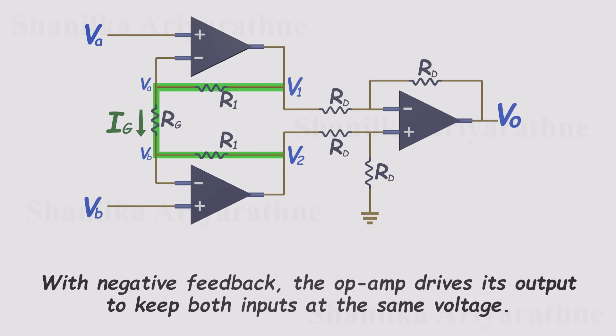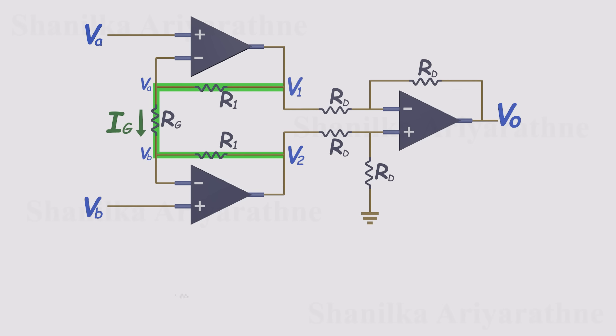That means this node must be at VA and this one at VB. And since op amp inputs draw almost no current, the same current flows through the entire resistor chain between V1 and V2. Let's call that current IG. We can write IG equals V1 minus V2 divided by R1 plus RG plus R1. But we can also describe IG as the current through the middle resistor, RG. IG equals VA minus VB over RG.